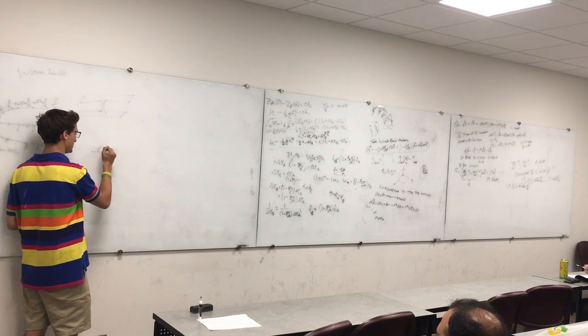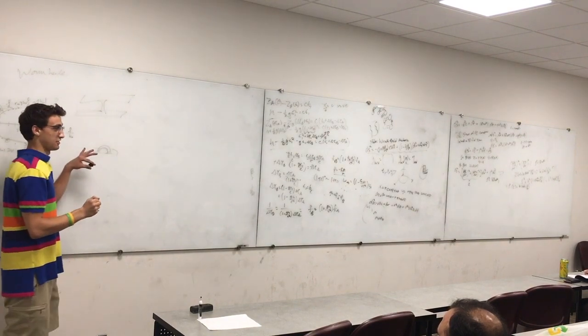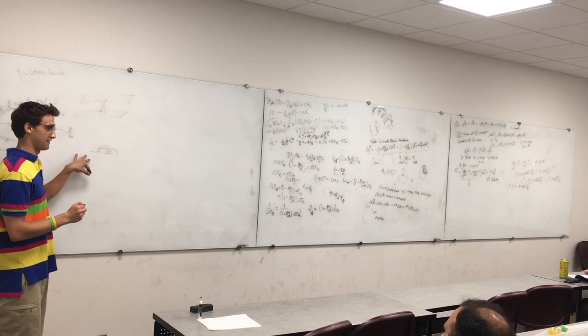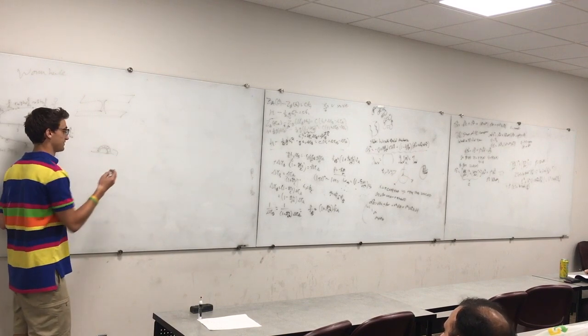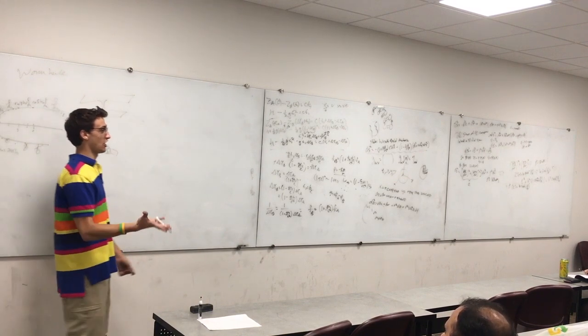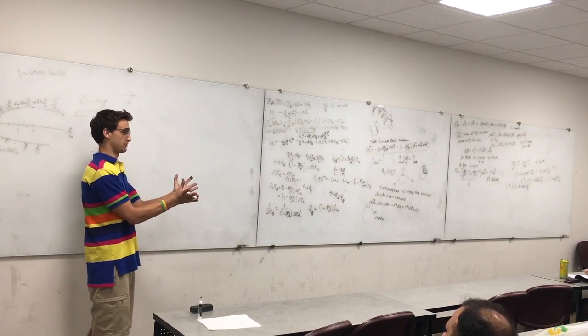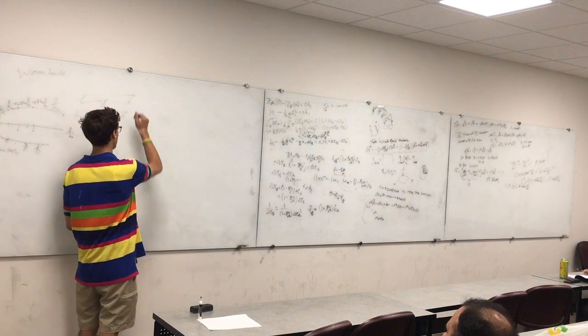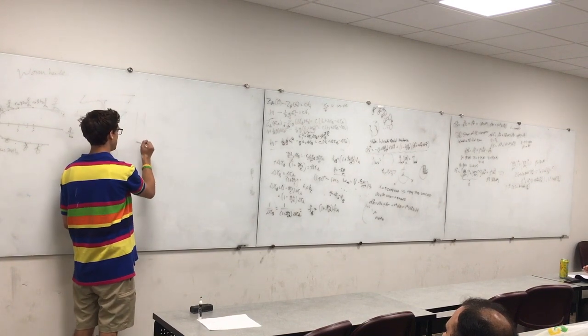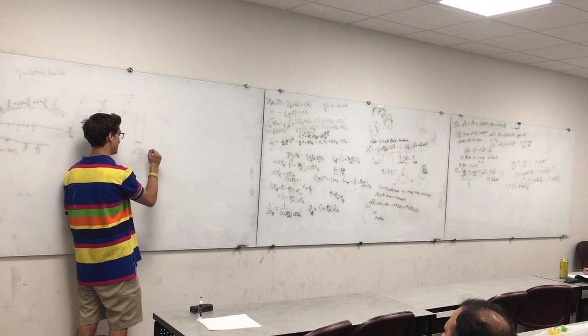But what happens? So, in order for this wormhole to be stable, we need negative energy. So, in order to have this wormhole stable, this bridge, we'll convince some negative energy.